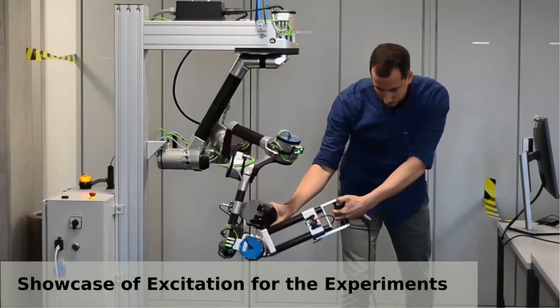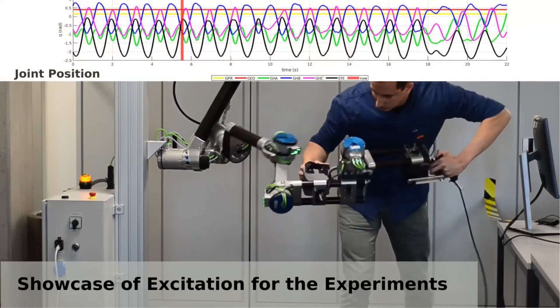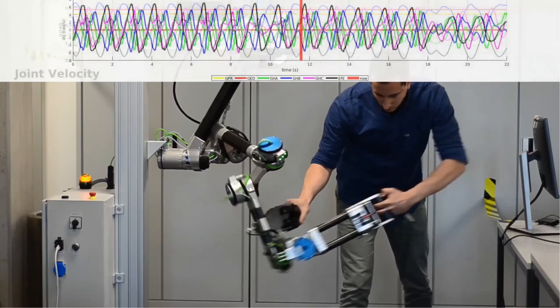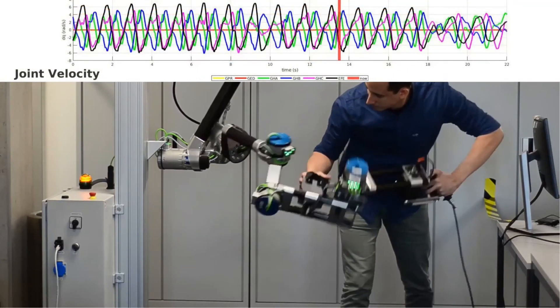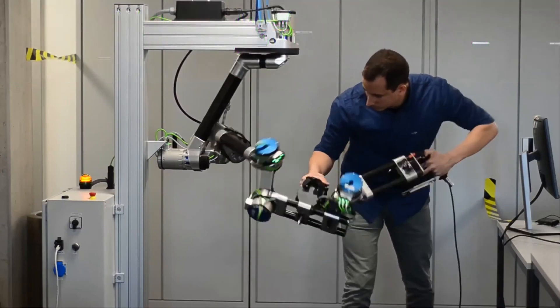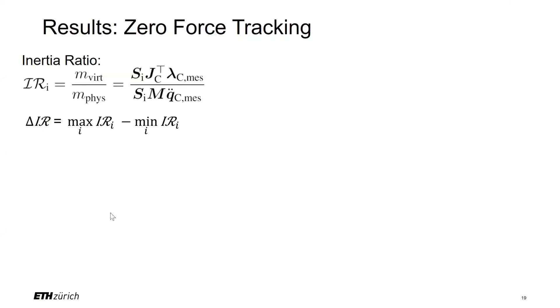To assess the performance in interaction force tracking, we chose to look at zero interaction force control only, as this is an often-reported metric. To this end, we excited the robot in the demonstrated way. The trajectories were chosen such that the four distal joints are moving with comparable range of motion. As already mentioned, we could demonstrate that gravity, Coriolis and centrifugal terms of the robot can be compensated well with a feed-forward term. The main expected advantage of the feedback controller is to reduce the undesired forces felt due to the inertia of the robot. Therefore, we choose the inertia ratio as a metric to evaluate the performance of our controller.